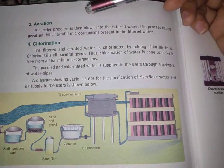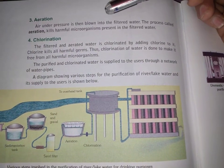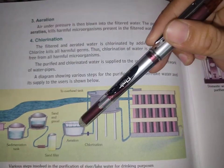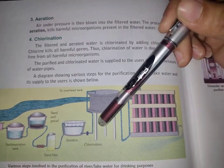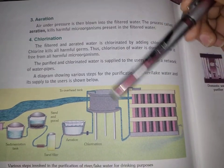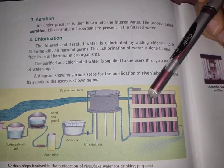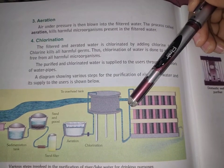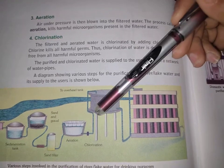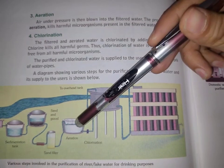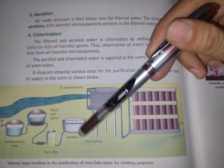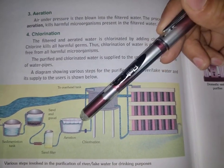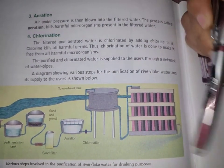In the aeration step, air under pressure is blown into the filtered water. This is called aeration. The microorganisms present in the water at this stage will be killed out.